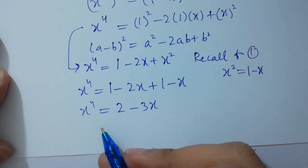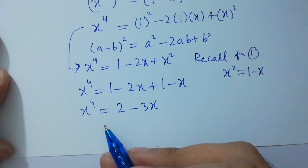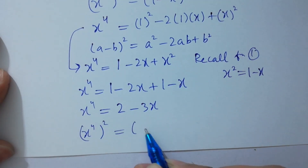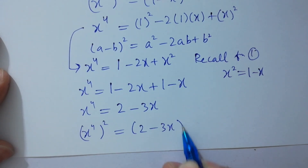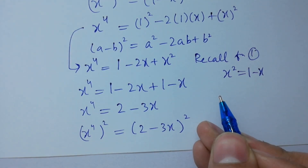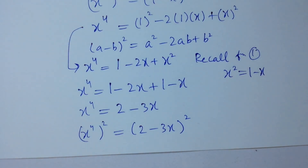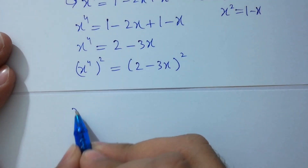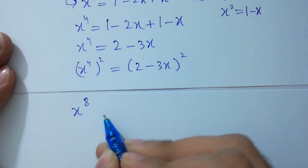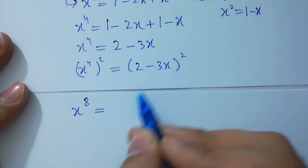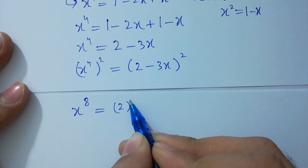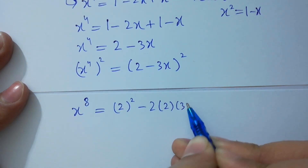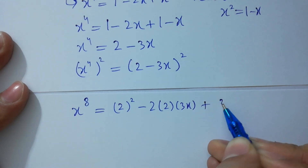In the next step, I am going to take the square on both sides. So (x to the power 4) squared equals (2 minus 3x) squared. The left side gives x to the power 8. Expanding the right side using the formula: 2 squared minus 2 times 2 times 3x plus (3x) squared, which is 4 minus 12x plus 9x squared.